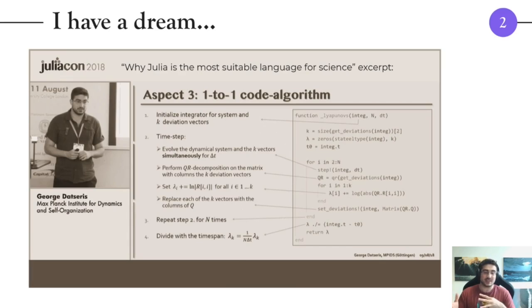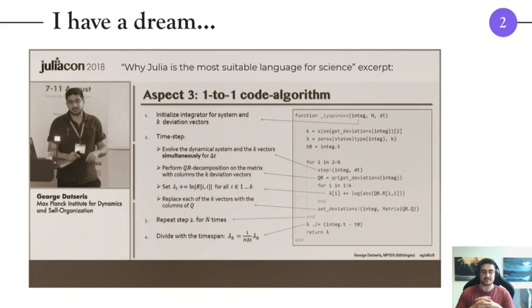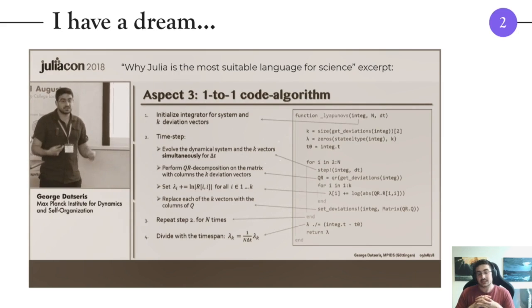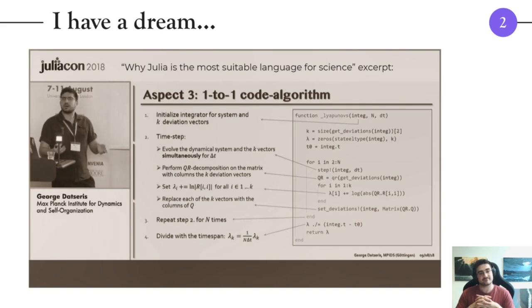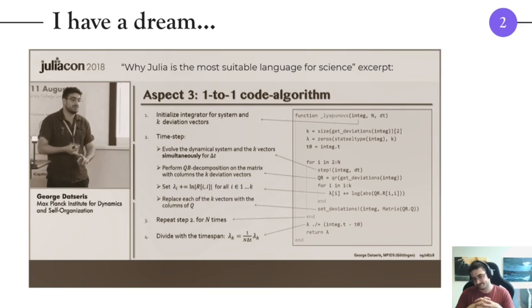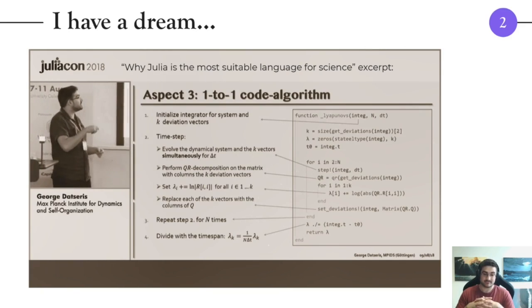So some years ago in JuliaCon 2018 I gave a presentation called Why Julia is the Most Suitable Language for Science. Today I want to connect with this old talk, but because not everyone here will have seen this talk, let me just show you a small 30-second excerpt from this previous talk. So I have taken many classes in nonlinear dynamics and I can tell you, you cannot study them without a computer. However, in all of these classes I have taken, nobody have ever shown me code ever. I was wondering why would nobody show code, and the answer is simple: code is complicated, you have to explain it, and code is very very large. I believe Julia can change this. I believe Julia can change physics education because now you don't have to show this, you can just show this.